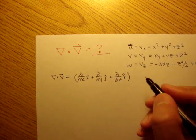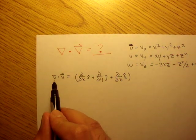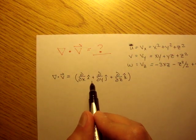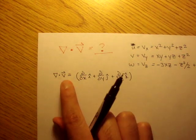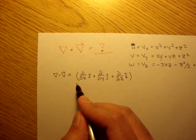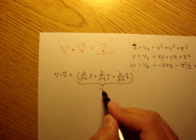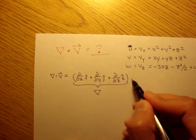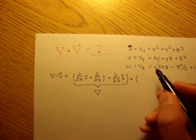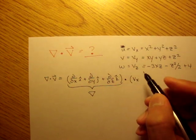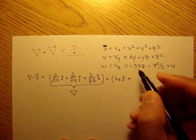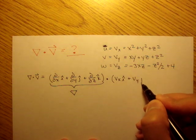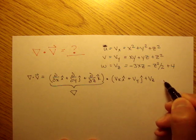And remember, del is a vector. So we include the unit vectors, i, j, and k, along with del. So this is del, and we dot that with v of x, i, plus v of y, j, plus v of z, k.